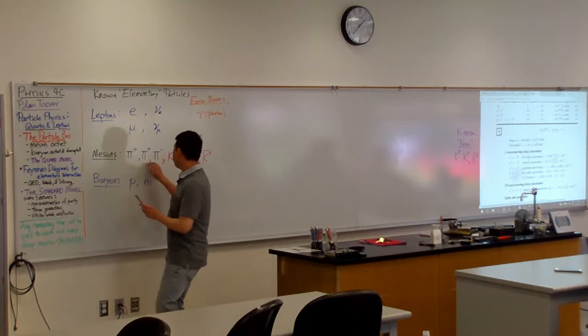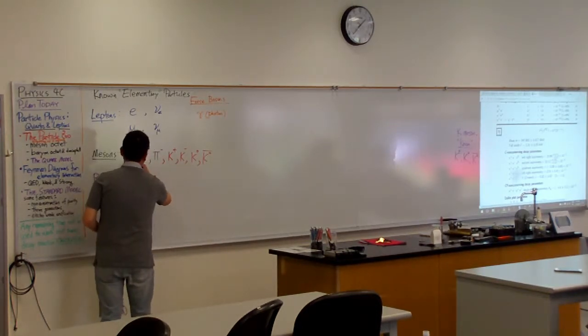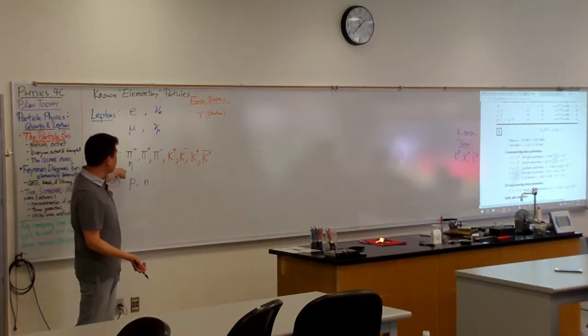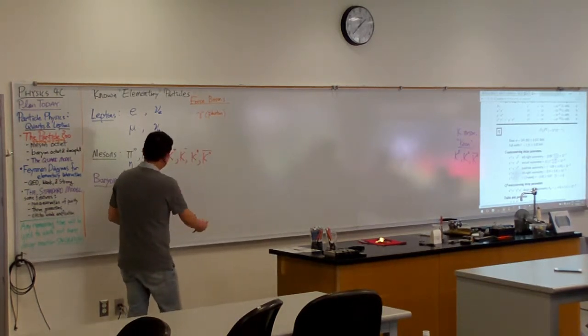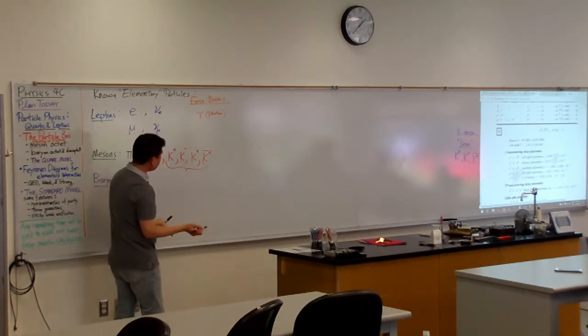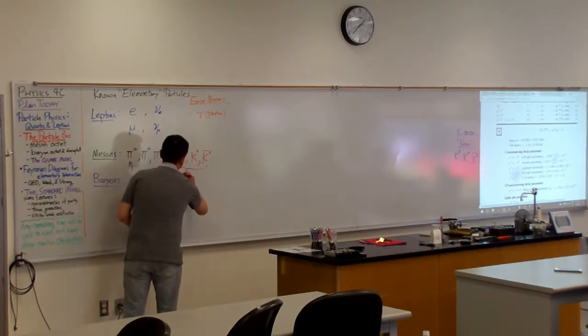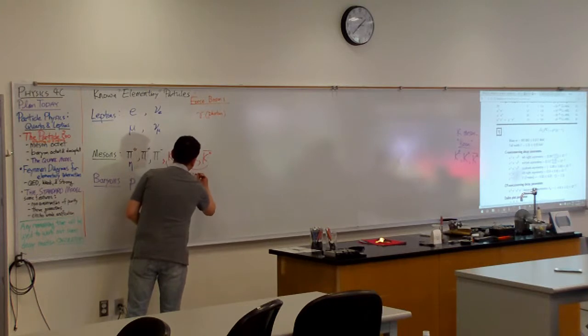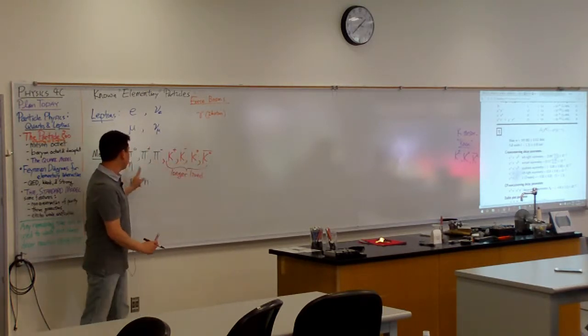So you have the pi mesons, and then you have eta meson, which is heavier than pi meson, but otherwise quite similar to pi mesons. So what's starting to set this apart are the fact that they are... so they are longer-lived, at least when you compare the neutral version to the neutral version.